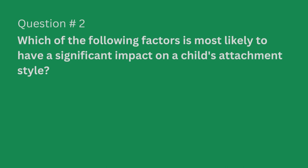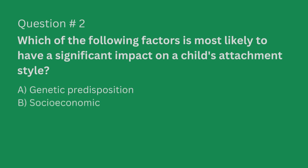Question number two. Which of the following factors is most likely to have a significant impact on a child's attachment style? A. Genetic predisposition. B. Socioeconomic status. C. Birth order. Or D. Temperament.